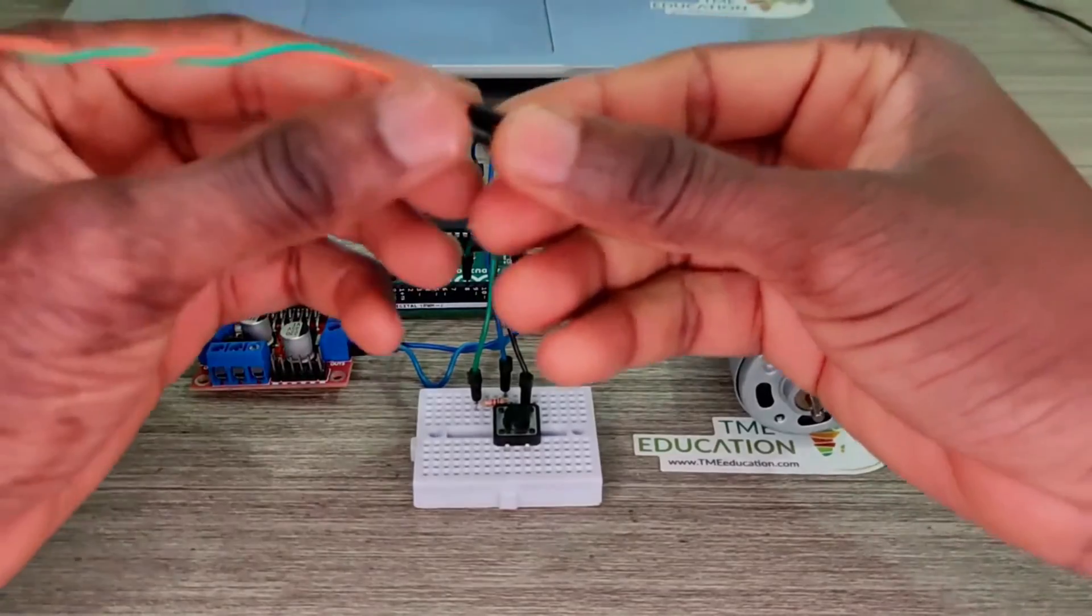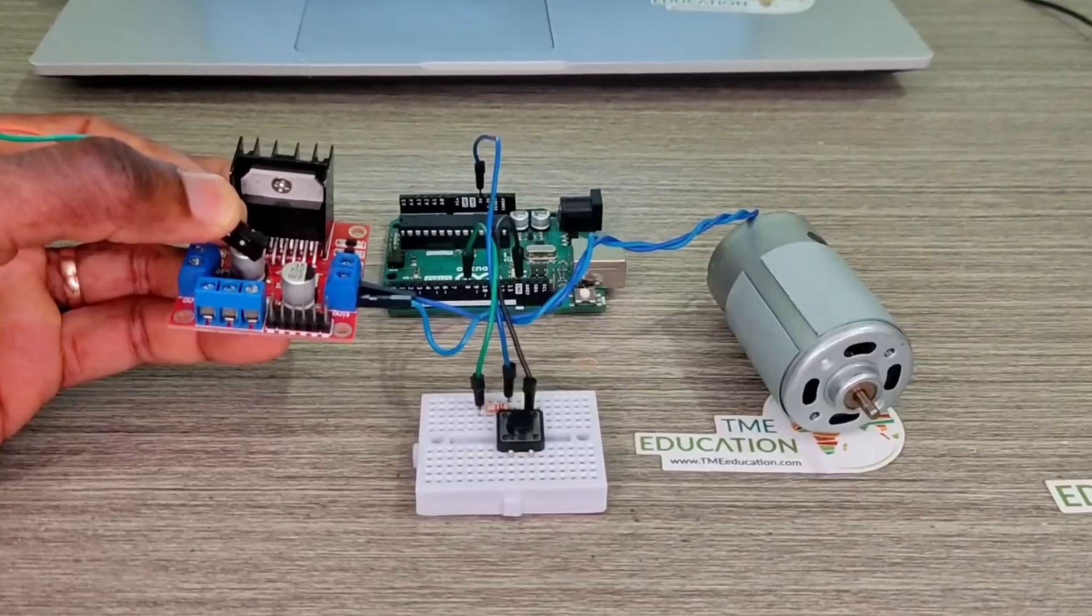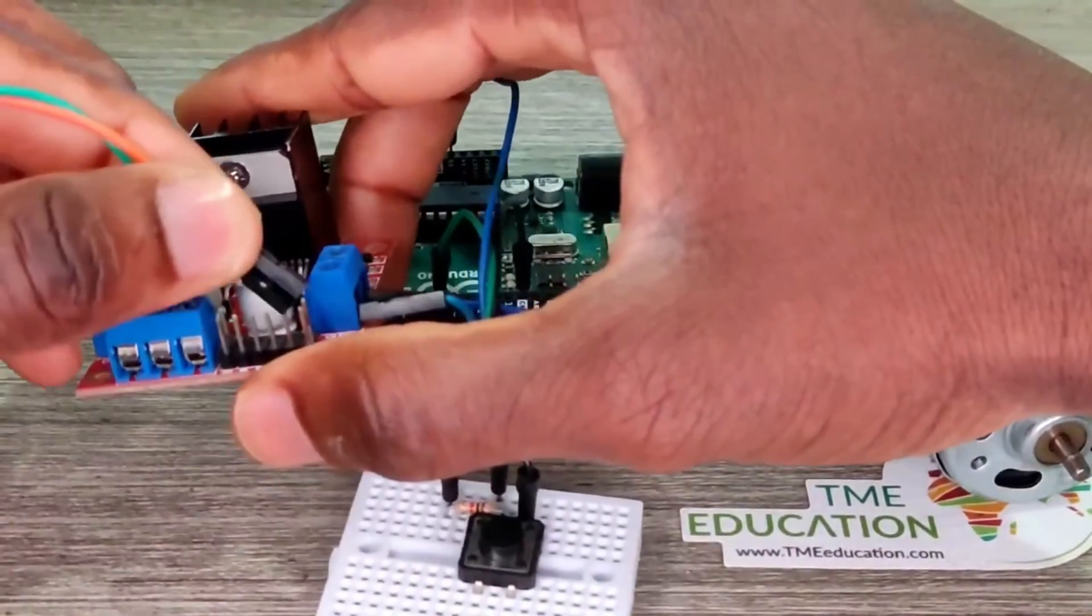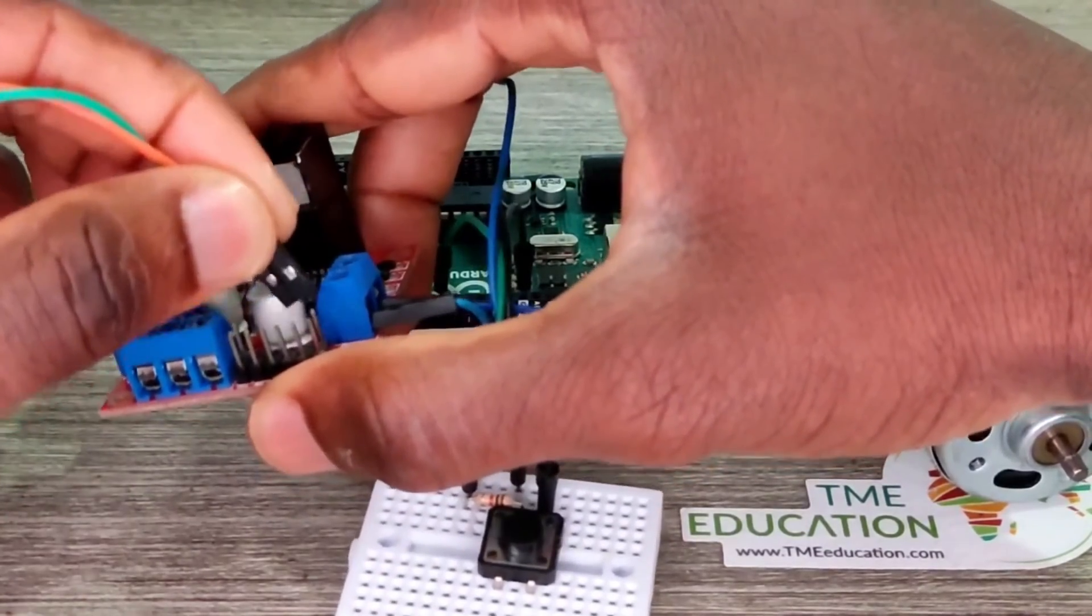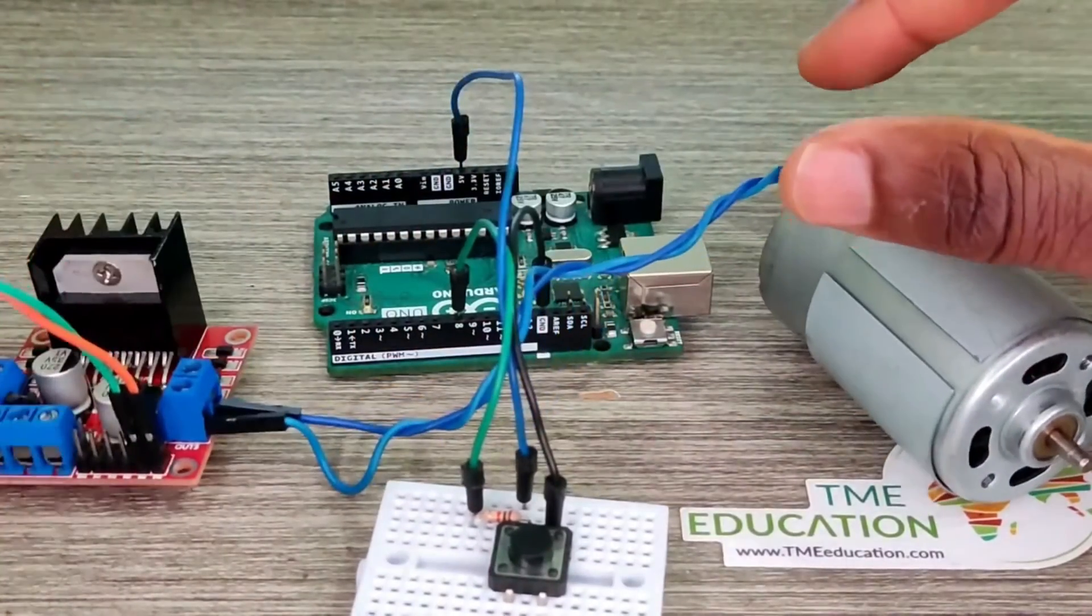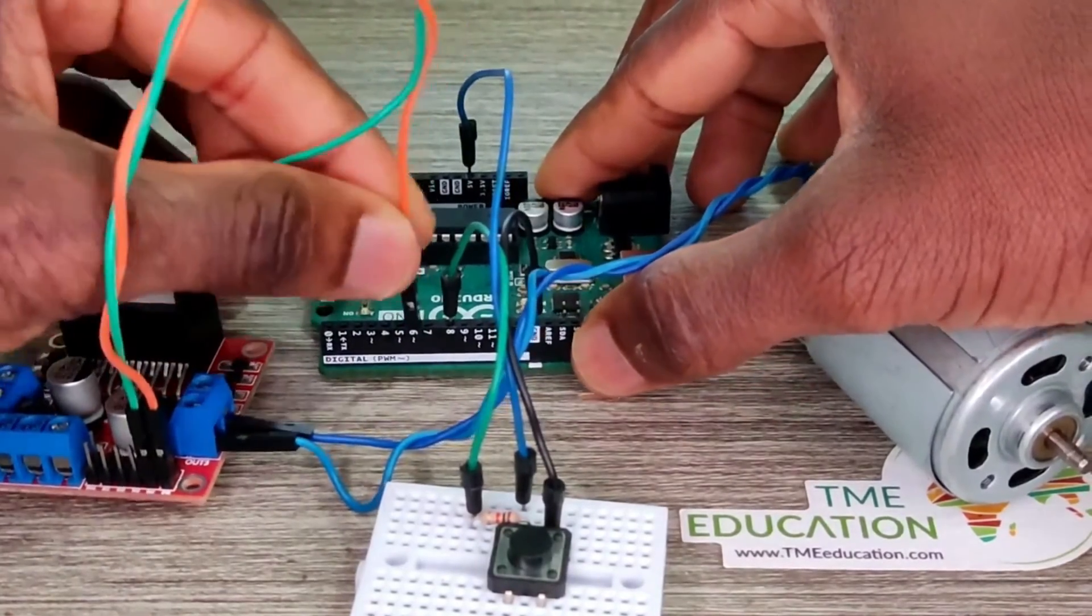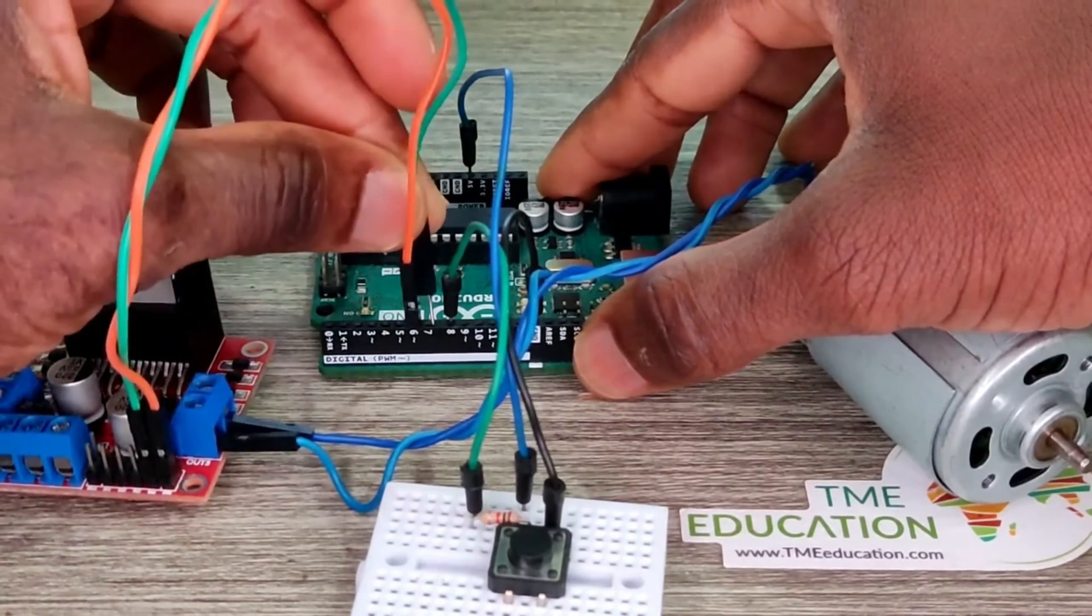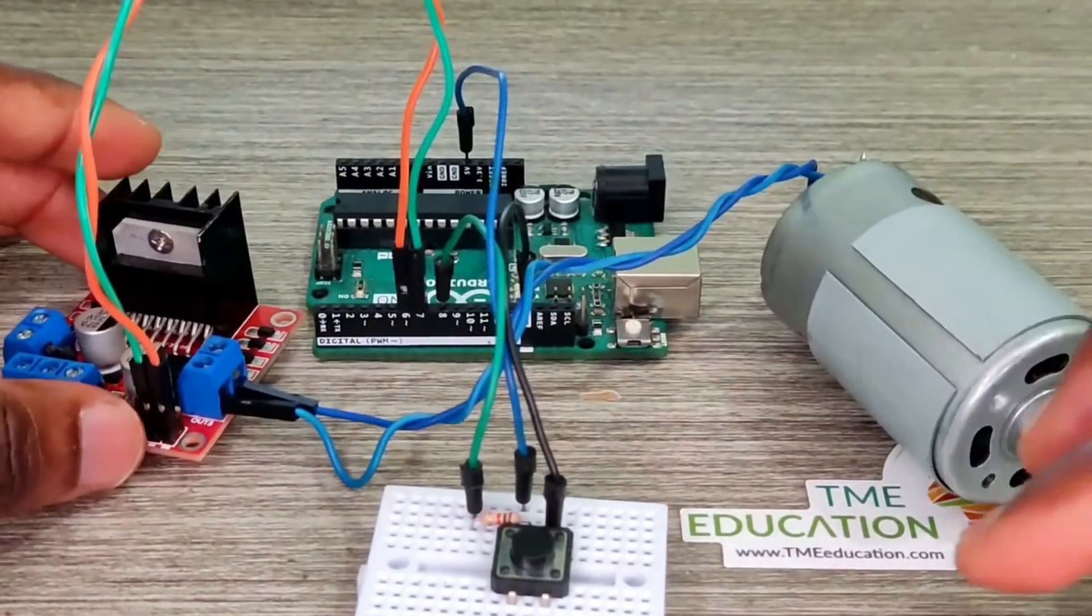So guys, we're going to control the speed of this motor through a push button. The output 3 and 4 are related to input 4 and the enable pin B. So input 4 is to be connected with pin 7, enable pin to pin 6 because pin 6 is capable of producing PWM signal.